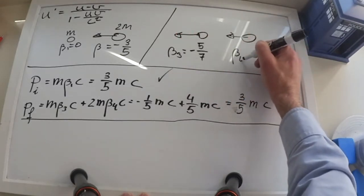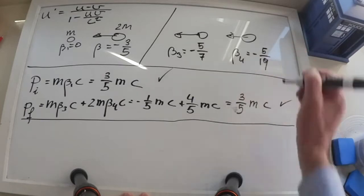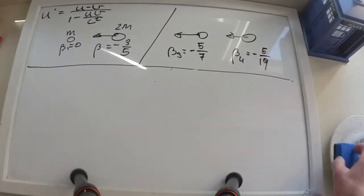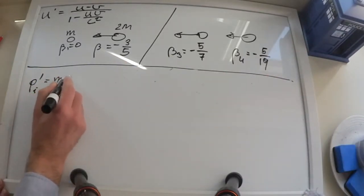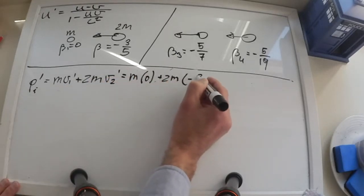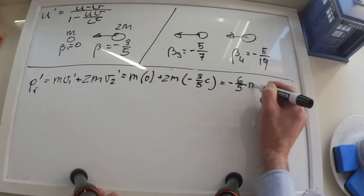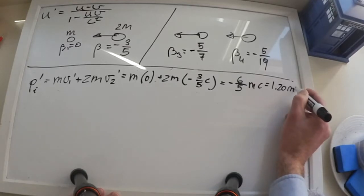If we transform the initial momentum, we get that from the second reference frame, it is minus 1.20 mc.